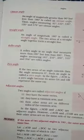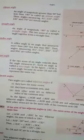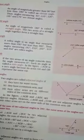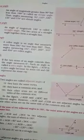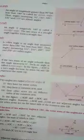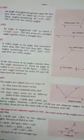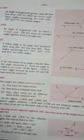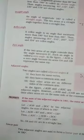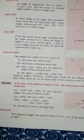Next, Adjacent Angles. Two angles are called adjacent angles if they have the same vertex, they have a common arm, and their other arms are on different sides of the common arm. Next, Linear Pair. Two adjacent angles are said to form a linear pair if the sum of their measures is 180 degree.